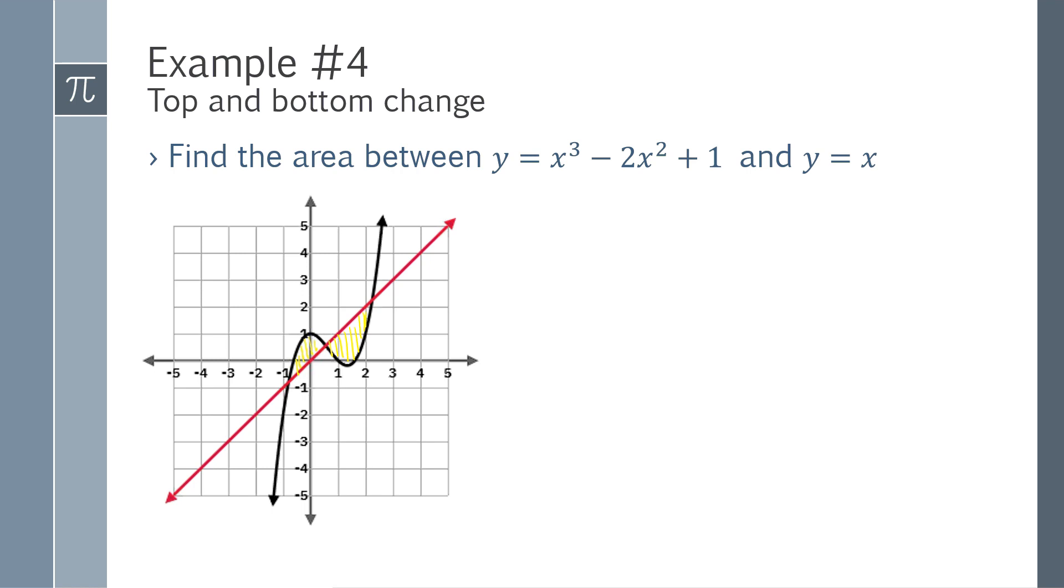Please note I do need to find my bounds because they don't tell me the bounds. This would be a calculator type problem, and I find that my intersection here is at negative 0.802. And again, that's a rounded value that I'm writing, but when I do my calculations, I'm going to use the full decimals. This intersection is at 0.555, and this intersection is at 2.247.